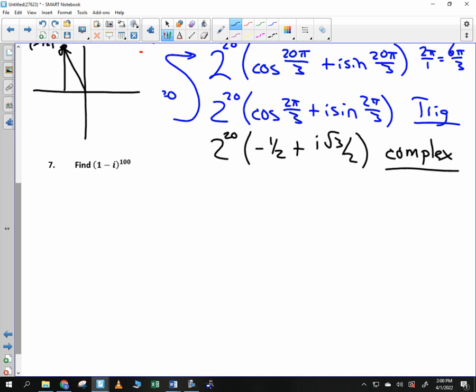Can I show you another way to write it? If I distributed this through, it would be a 2 to the 20th on top, wouldn't it? And it would be a 2 on the bottom, a 2 to the 1st. What is 2 to the 20th divided by 2 to the 1st? Try it again. 2 to the 20th divided by 2 to the 1st. 2 to the 19th, right? So the way that this is commonly written in this situation would be negative 2 to the 19th plus i 2 to the 19th root of 3. So that's another way to write it. I would accept either or. We good with that?